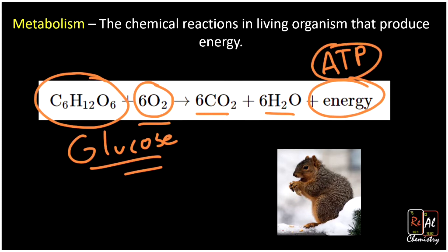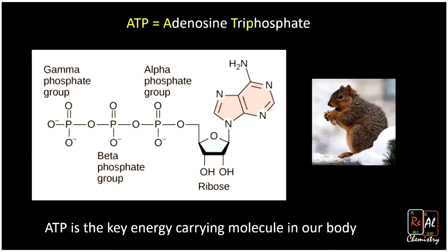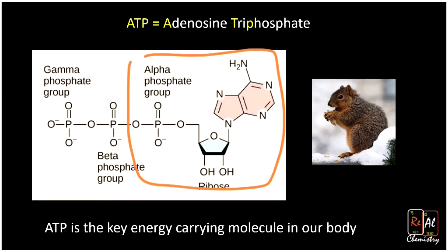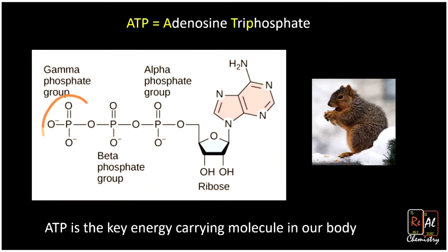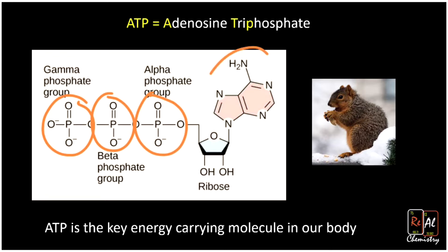ATP is the main energy-carrying molecule in our body. It stands for adenosine triphosphate. It actually looks very much like one of the nucleotides in DNA—it has a sugar, a phosphate group, and a base, exactly the basic structure we saw in DNA. But interestingly, we add two more phosphate groups onto it, so there are three total phosphate groups. This base is called adenosine, so that's why we get adenosine triphosphate.